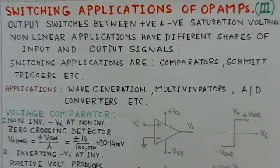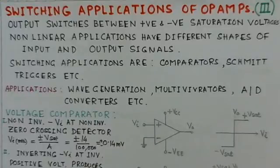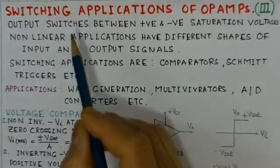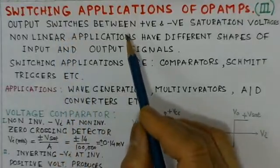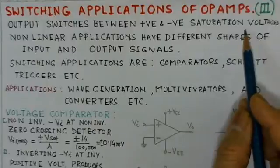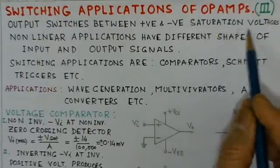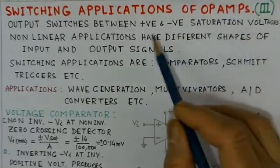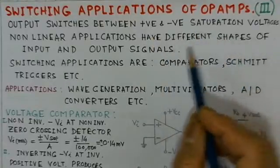This video is Part 3 of op-amp applications and is based on switching applications like comparators, detectors, and Schmitt triggers. In these applications, the output switches between the positive and negative saturation voltages, which are applied as power supply to the operational amplifier. Since the output goes to saturation, it is either positive saturation or negative saturation — these are nonlinear applications.